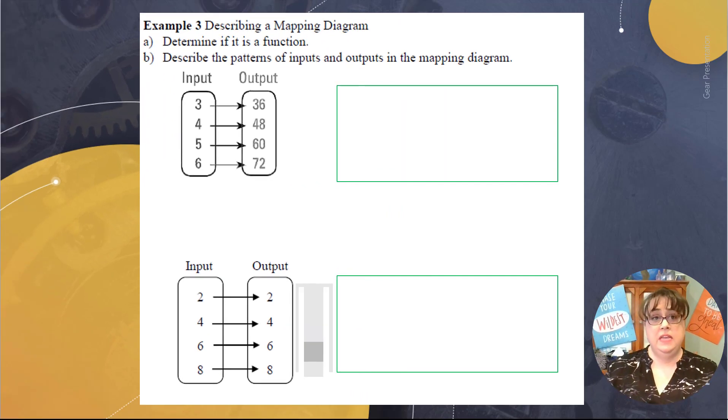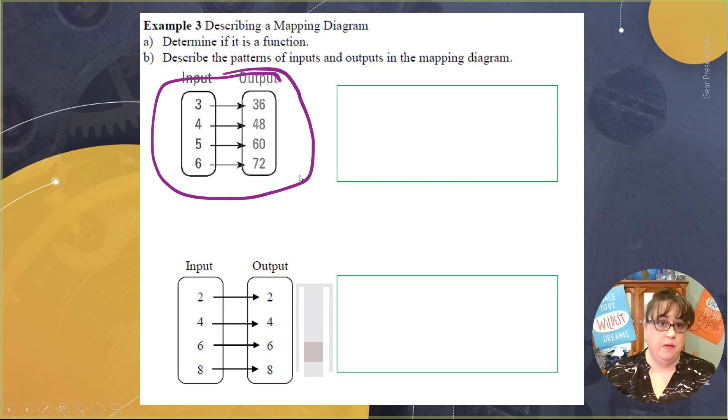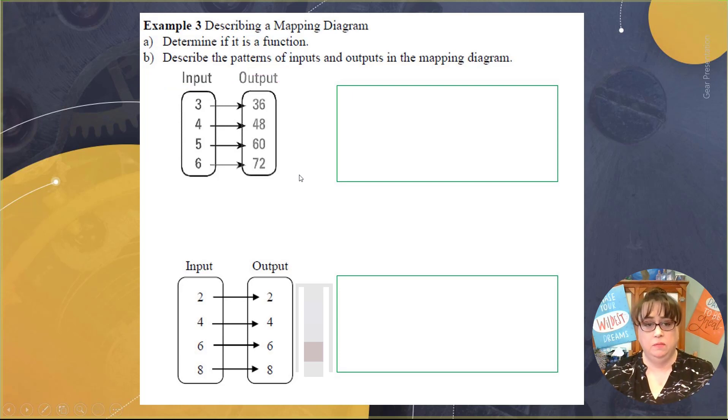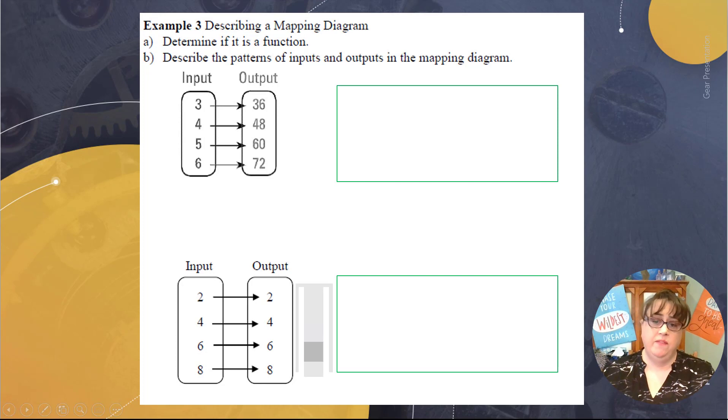So let's look at this. Are these here functions or are these not functions? In other words, are they predictable? Each input has only one output. They each have only one line coming off of them. So that's good news. So then how do we figure out how I go from an input to an output? We start looking for patterns. So if I look at my pattern that's happening here, three to four, four to five, and five to six, those are each increasing by one.